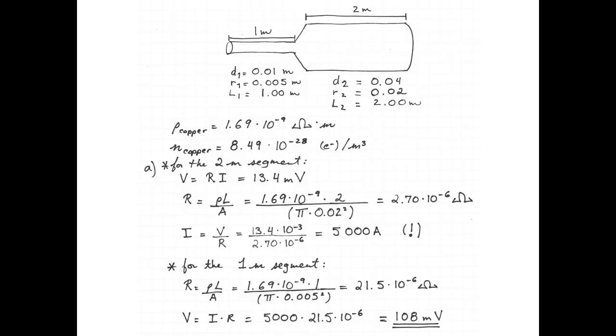This makes the potential difference across the 1 m segment, 5,000 amperes multiplied by the 21.5 micro-ohms, 108 millivolts.